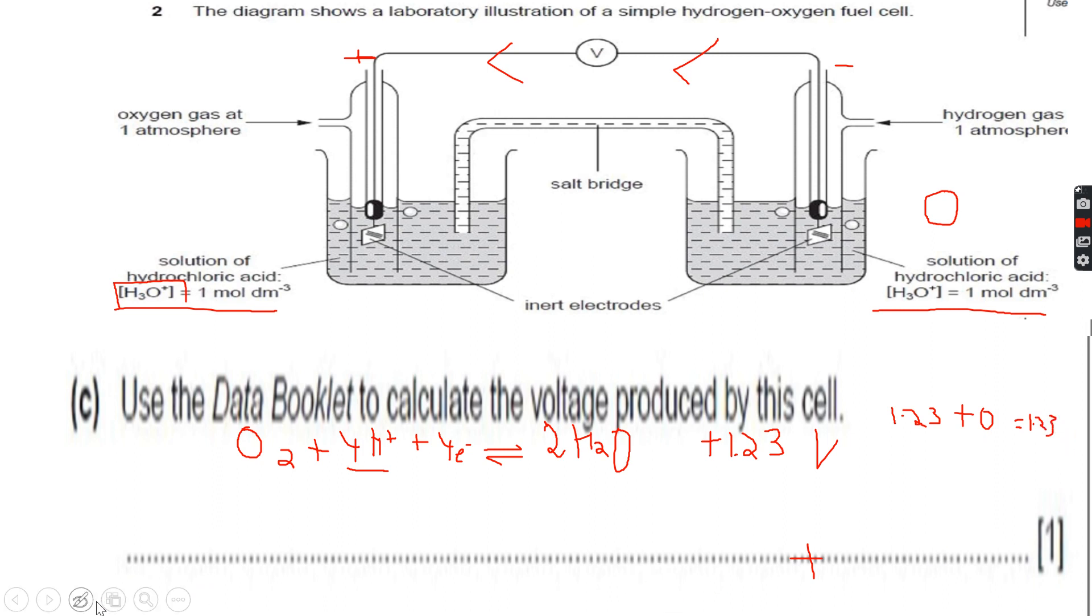This becomes +1.23 volts - the voltage that is being produced by this cell. This is the value that we will see on the voltmeter over here. Now let's move to the next part.